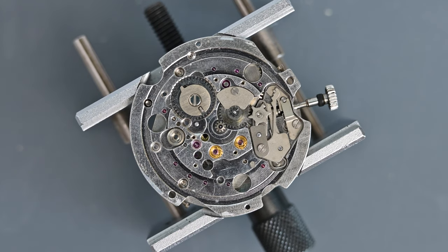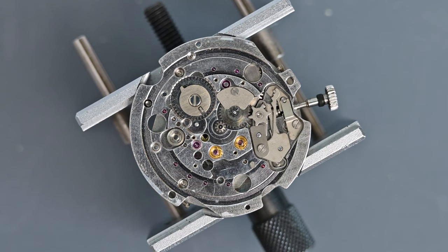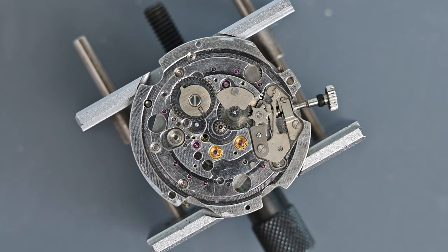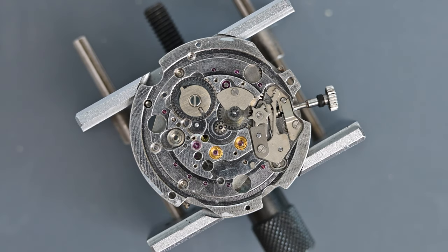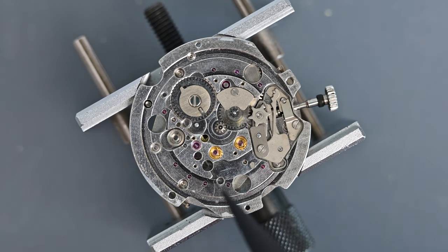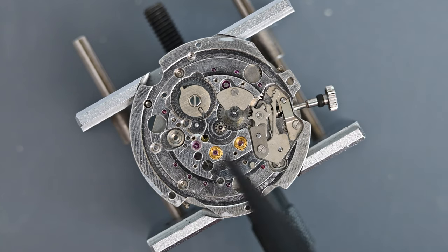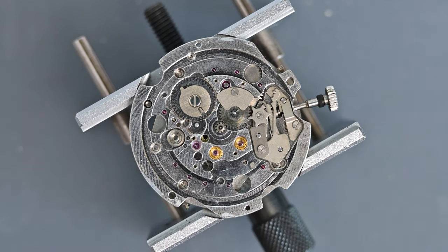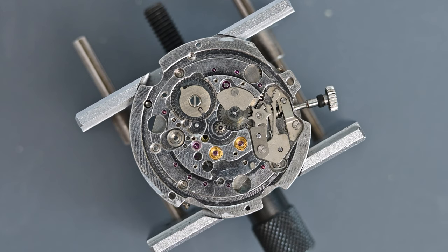We left things at the end of the previous episode having stripped most of the calendar functions from the top side of the movement. We've removed the two diafix jewels here and here, and removed the dia shock setting from the dial side of the balance bearing.